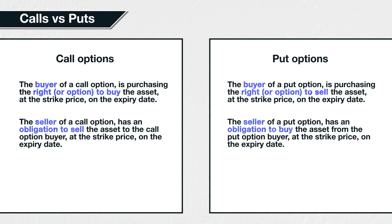It is usually put options that confuse new option traders. This is because the buyer of a put option is actually betting on the price of the asset decreasing — put options increase in value when the price of the asset goes down. Don't worry if you don't fully understand this yet, because there are two entire sections on call options and put options covering exactly how each works. For now, just remember that a call option buyer has the right to buy the asset and a put option buyer has the right to sell the asset.